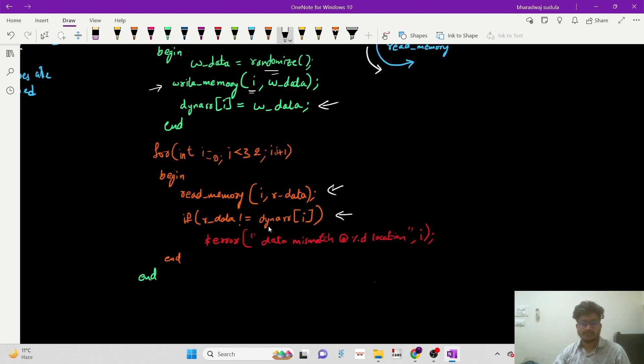with the dynamic array so that there is no mismatch between the DUT output and the dynamic array data. If there is any mismatch, we'll be displaying an error message.